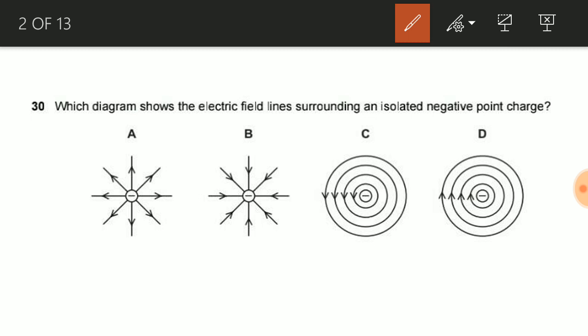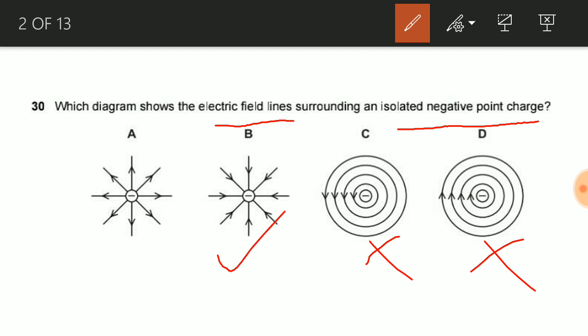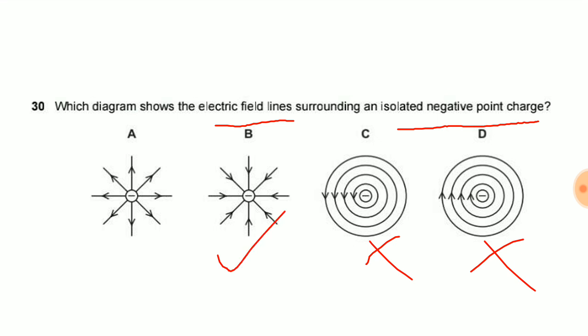In this question we need to find the diagram which gives electric field lines surrounding an isolated negative point charge. For an isolated negative point charge, the electric field lines cannot be circular, so our answer can be either A or B. For a negative point charge, the electric field lines are directed towards that charge, so option B is the correct answer for question number 30.